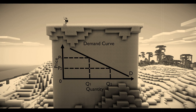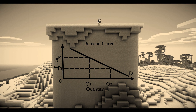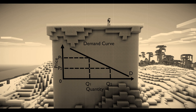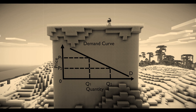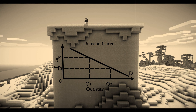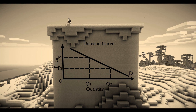This is the demand curve. The y-axis is the price and the x-axis is quantity. The curve is downward sloping because, according to the law of demand, there is an inverse relationship between the quantity of a good demanded over a particular time period and its price. As the price of the good increases, the quantity of the good demanded falls. As the price falls, the quantity demanded increases.